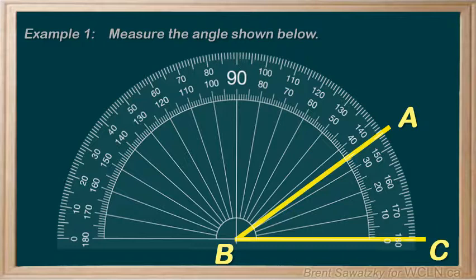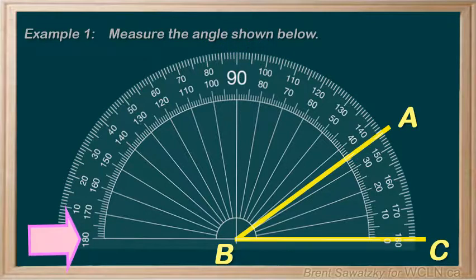We notice that there are two sets of numbers on the protractor. One starts at zero over here, and goes up 10, 20, 30, 40, and so on, up to 90 degrees here, and 180 degrees way over here.